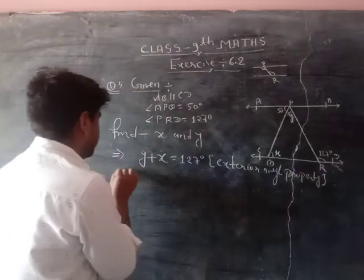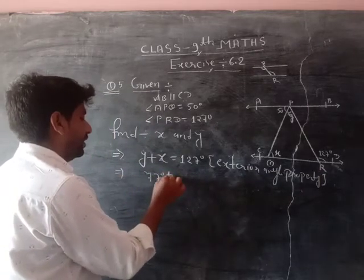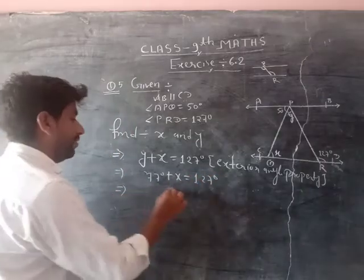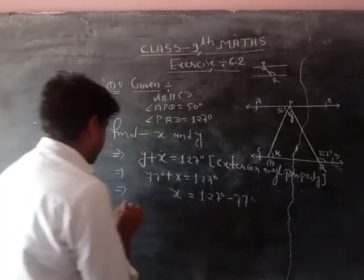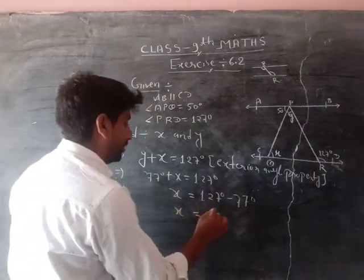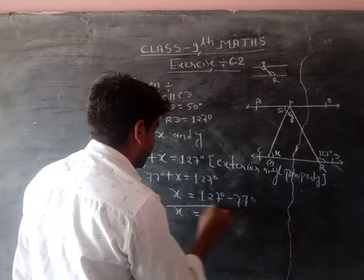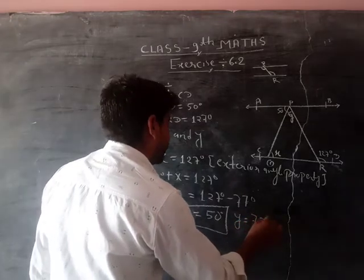Then what, we have y, y's value is 77 degrees, plus x equals to 127 degrees. Then what, x equals to 127 degrees minus 77 degrees. Then we get x equals to 50 and y equals to 77.